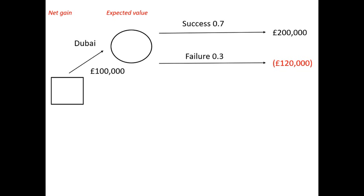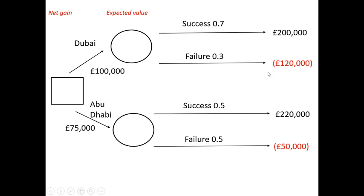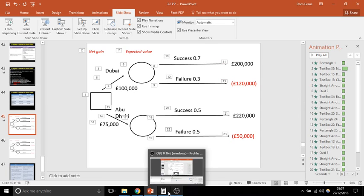For Abu Dhabi, it's going to cost us £75,000. The chance of success is 50%, which would net us £220,000; and obviously if the chance of success is 50%, there's a 50% chance of failure which would cost us £50,000. I've expressed negative figures in brackets — that's common practice in business accounts, and all it means is that it's a minus figure. Now I'll get the calculator out and run through these figures to show you how to fill in the decision tree.